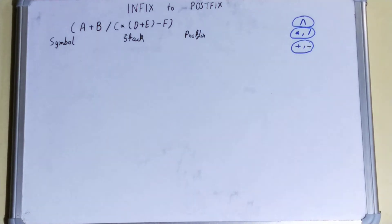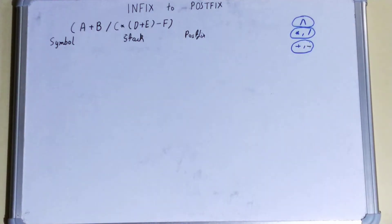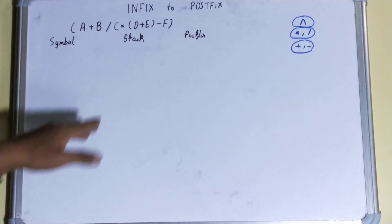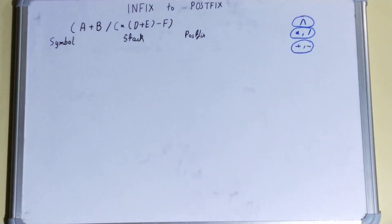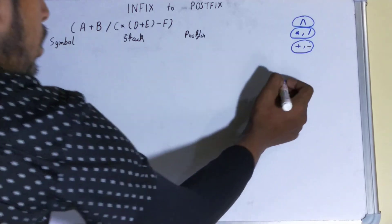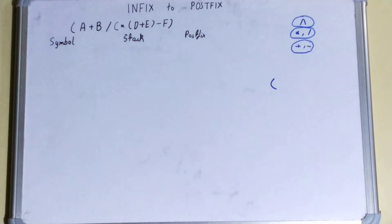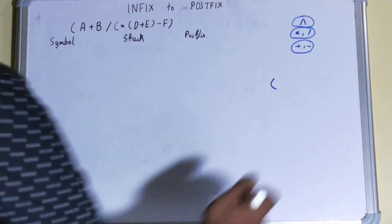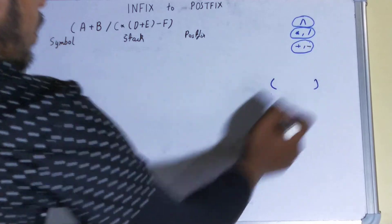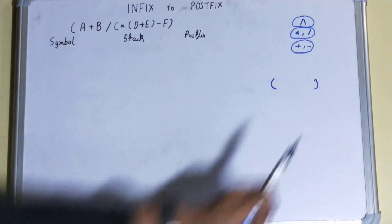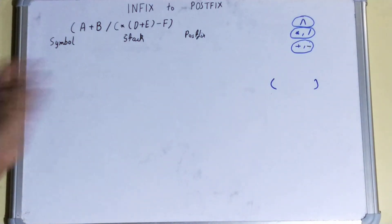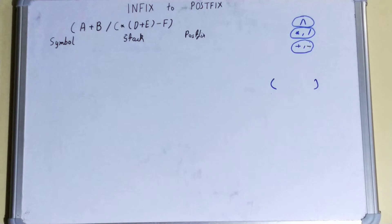The second rule is that no two same-priority operators should be stacked together — the existing one must be popped out before stacking in the new operator. The third rule is that if an opening bracket is stacked in and you later encounter a closing bracket, everything in between in your stack should also be popped out.